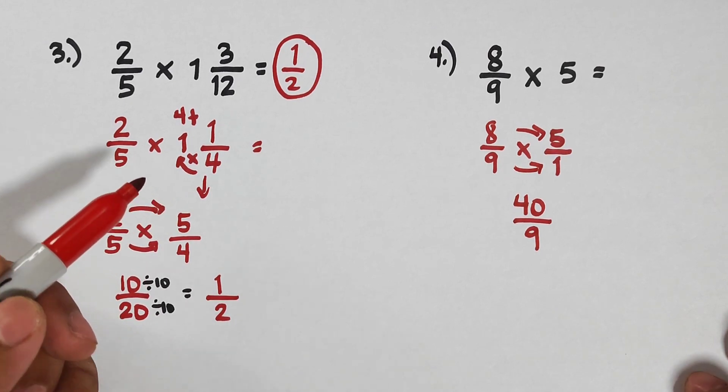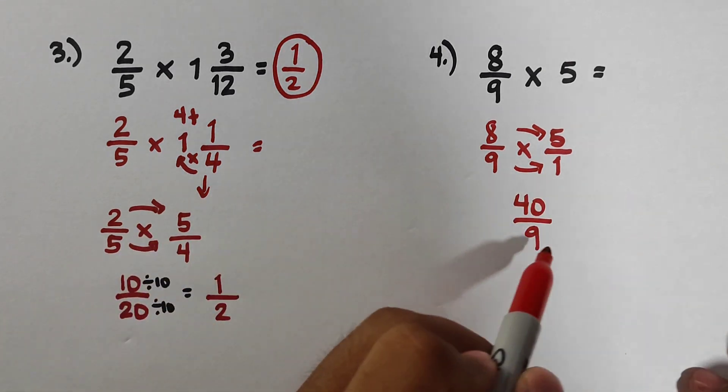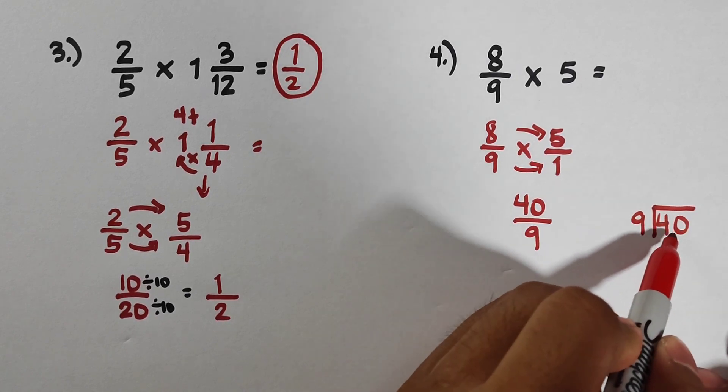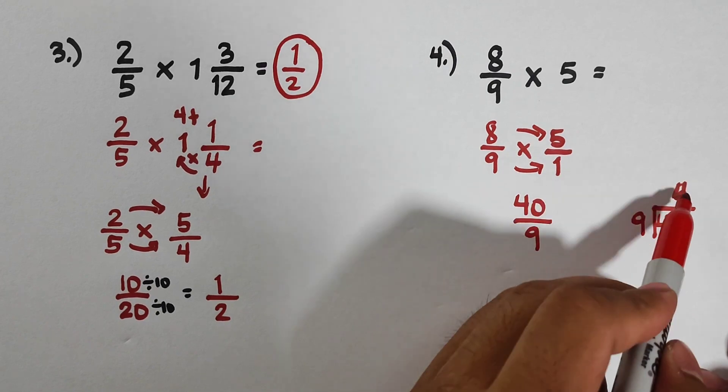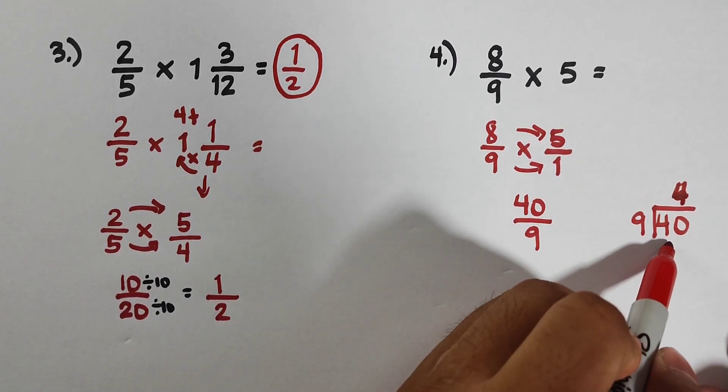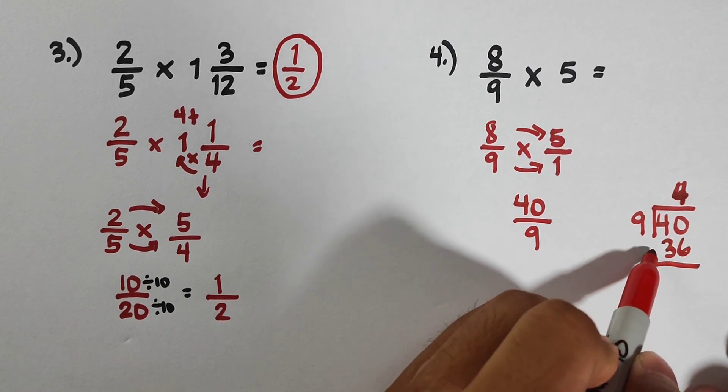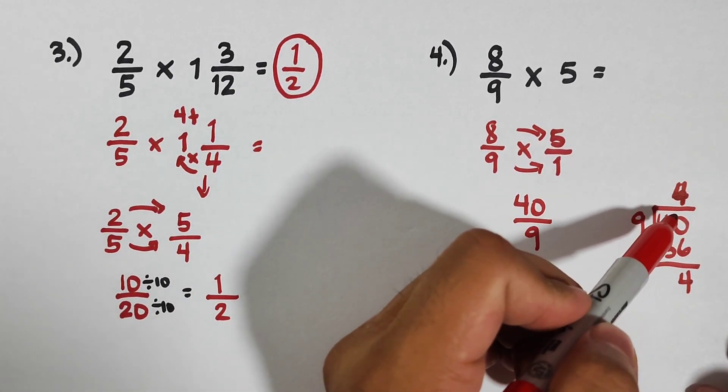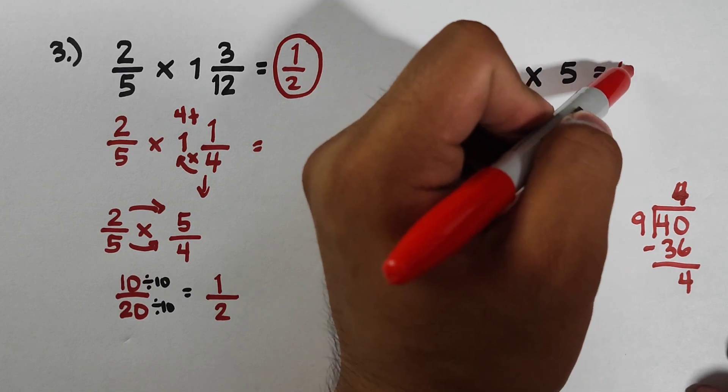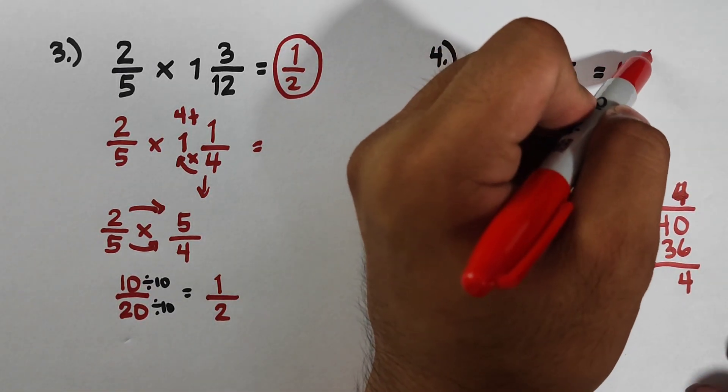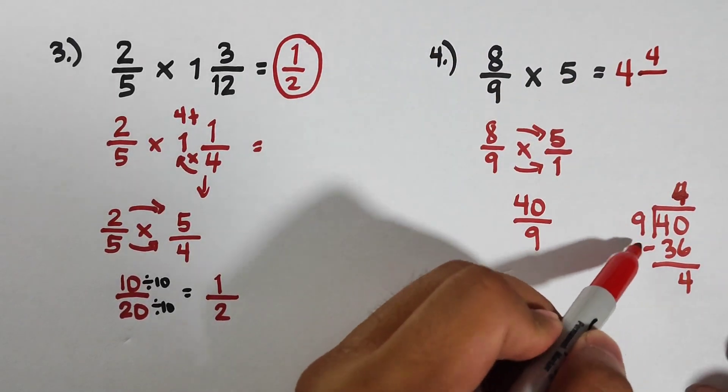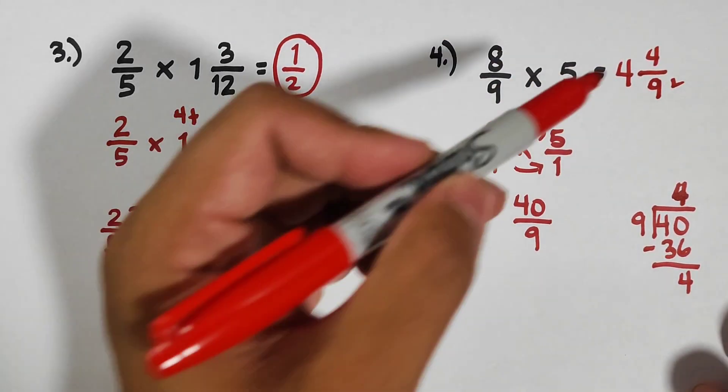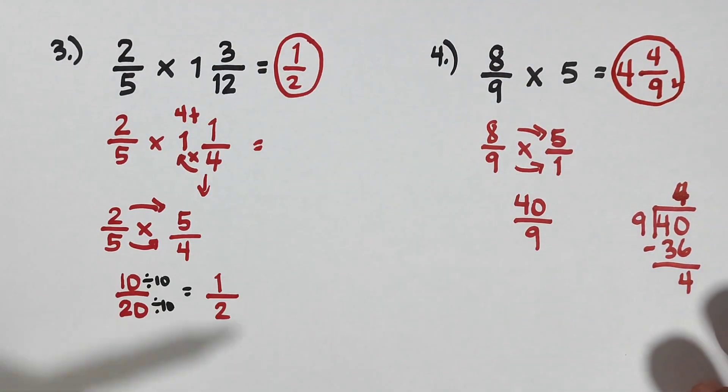So how do we do that? First you will divide 40 by 9. 40 divided by 9 is equal to 4. 4 times 9, which is equal to 36. Subtract this one, the answer is equal to 4. Now as you can see here, we have the quotient of 4, meaning that is the whole number, and this remainder 4 will serve as your new numerator over this divisor 9. Copy your original divisor, and this is the answer. What we have is 4 and 4/9.